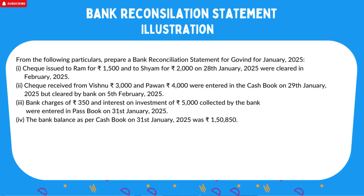From the following particulars, prepare Bank Reconciliation Statement for Gobind, January 2025. Number one: checks issued to RAM ₹1500 and SHAM ₹2000 on 28th January were cleared in February 2025. Next: checks received from Vishnu and Pawan ₹4000 were entered in cash book on 29th January but cleared by bank on 5th February 2025. Bank charges ₹350 and interest on investment ₹5000 collected by bank — entered in passbook on 31st January. The bank balance as per cash book on 31st January 2025 was ₹1,50,850.